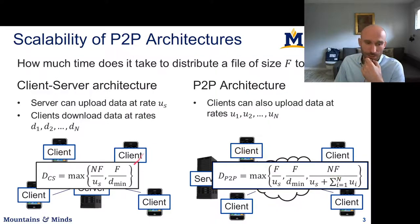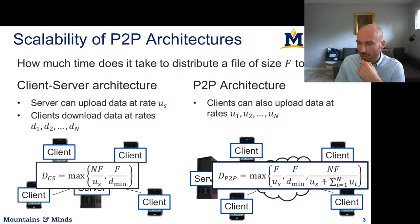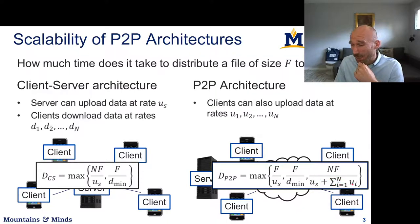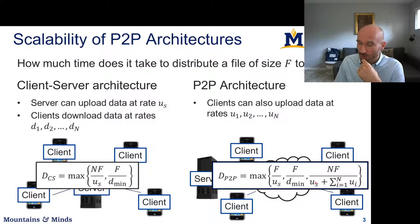You can see if the server upload rate was the bottleneck before, now you can see that this term — server plus client upload rates — governs the speed of the system at scale, which basically allows you to add the resources of the server and the resources of the clients. So the more clients there are, the more resources there are in the system, which is the cool thing about peer-to-peer.